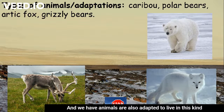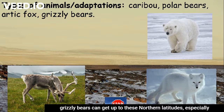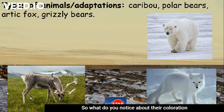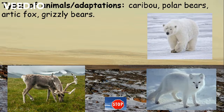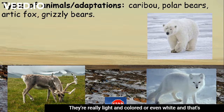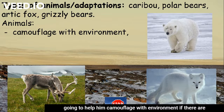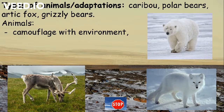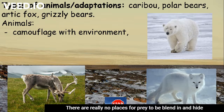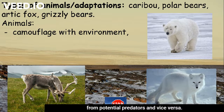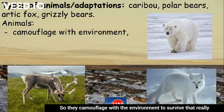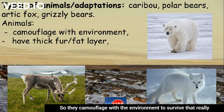Animals are also adapted to live in this kind of environment. We have caribou, polar bears, arctic foxes, and even some grizzly bears that can get up to these northern latitudes, especially in Alaska. You can notice their coloration — they're really light-colored or even white, and that's going to help them camouflage with their environment. Since there are really no trees and the terrain is kind of flat, there are no places for prey to hide from predators or vice versa, so they camouflage with the environment to survive.